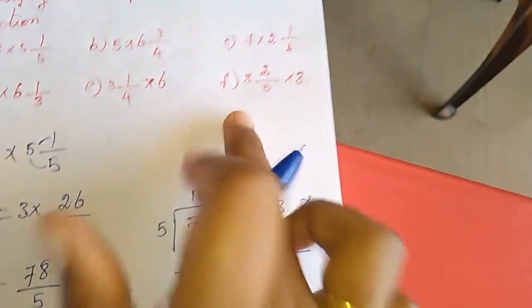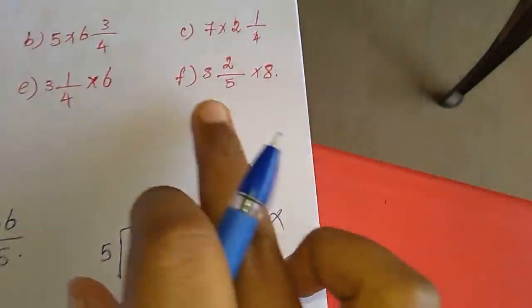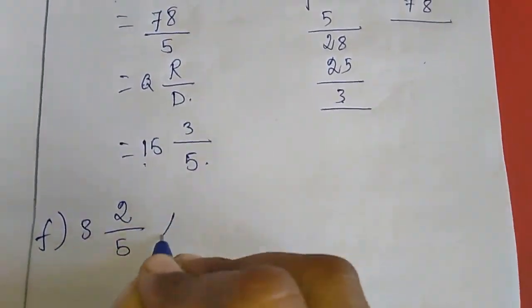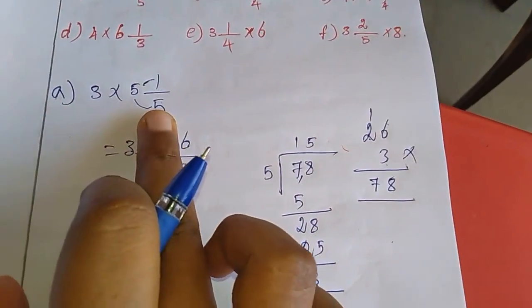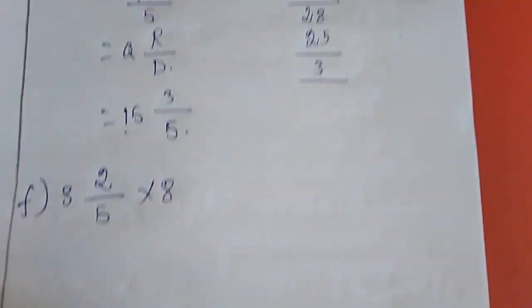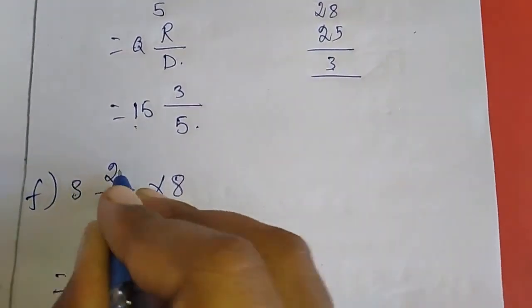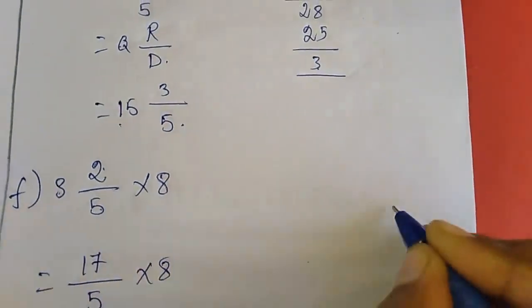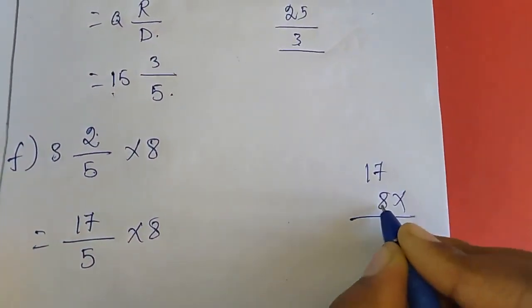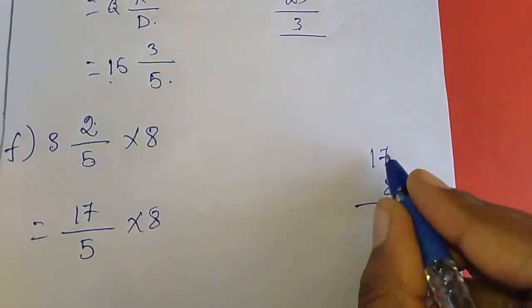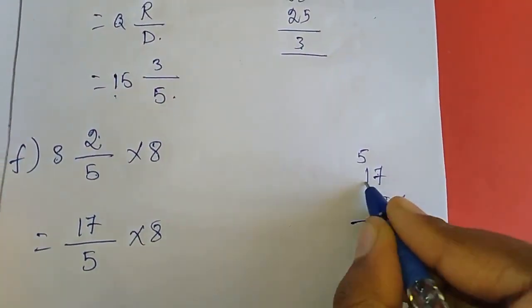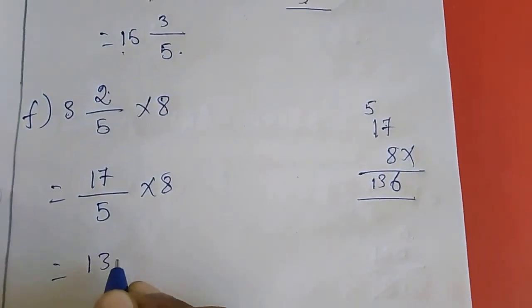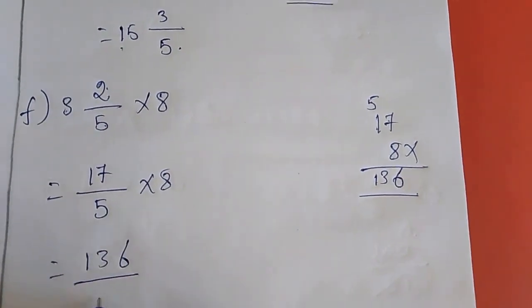Now the last sum, F sum: 3 and 2 by 5 into 8. Here the first fraction is a mixed fraction, so I am going to change it. 3×5 are 15, plus 2 is 17. So 17 by 5 into 8. 17 into 8: 8×7 is 56, carry 5. 8×1 is 8, plus 5 is 13. So 136 divided by 5.